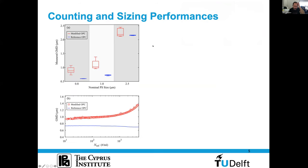Some results from these tests — how does the OPC perform in terms of counting and sizing? We atomized polydisperse polystyrene particles at fixed sizes of 800 nanometers, 1 micron, and 2.5 microns. The red line is the modified AlphaSense OPC, and the reference is the Grimm OPC. The agreement is within reasonable range. The reference instrument slightly underestimates at 1 micron, which is well known in the literature for that specific instrument.